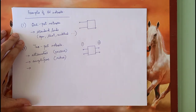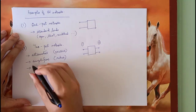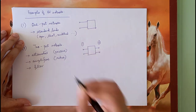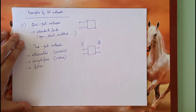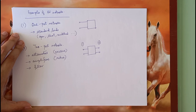Another example of a two-port network is a filter. You can have a low-pass filter, high-pass filter, or band-pass filter. Usually most filters in the RF domain are passive, although there are active filters too.